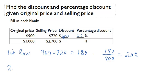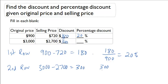I will do the same for the second row. My discount is simply $3,000 minus $2,700, which will be $300. And my percentage discount is $300 divided by the original price of $3,000, which will give me 10%.